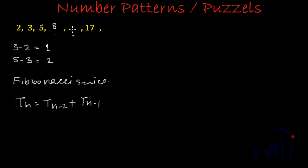And this place will be 8 plus 5 is 13. And then this place should be actually 13 plus 8 which is 21. But here we are provided with 17. That means this series is not a Fibonacci series.